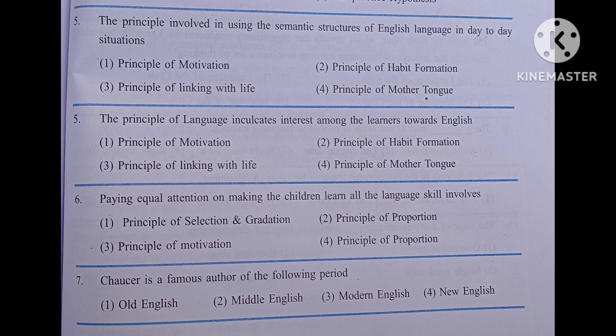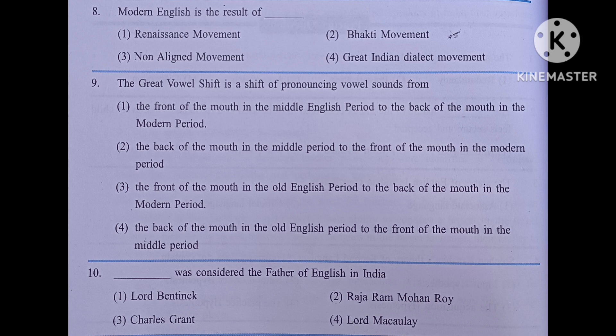Chaucer is a famous author of the following period: number one, old English; number two, middle English; number three, modern English; number four, new English. The answer is middle English.